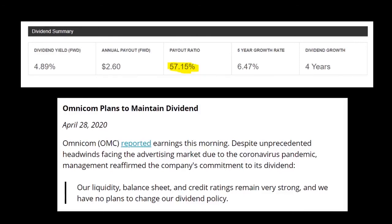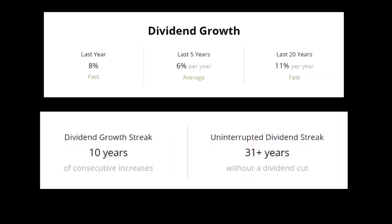If liquidity is good, the current ratio is used to measure a company's ability to pay back its liabilities and debts using its assets — cash, marketable securities, inventory, and accounts receivable. A ratio value of one or better is typically considered good from a liquidity standpoint, but it is industry dependent.